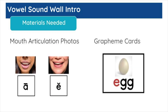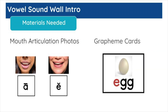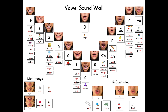To prepare for this lesson, print mouth articulation photos and graphing cards found in the lesson plan. Optionally, print individual sound walls and attach to a file folder for each student.